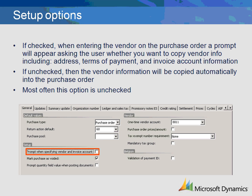The Prompt When Specifying Vendor and Invoice Account checkbox merely serves as an on-screen warning message each time a purchase order is created. It is intended to ask the user if they would like the information in the vendor record to be copied into the header of the purchase order. In most instances, you do want the information to be copied as it is in the vendor record, and thus we leave this field unchecked.